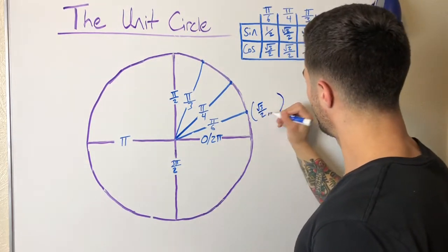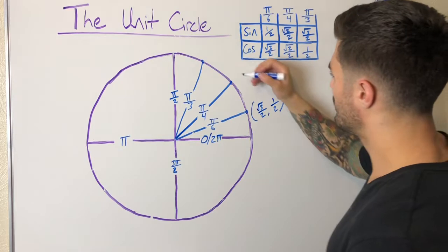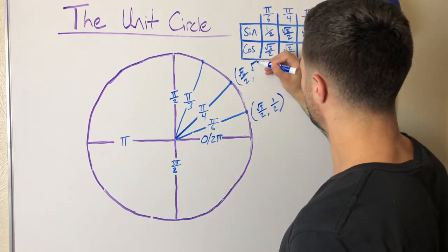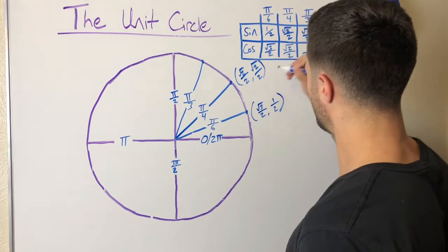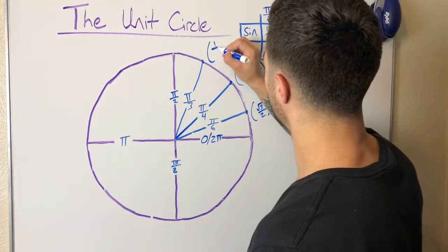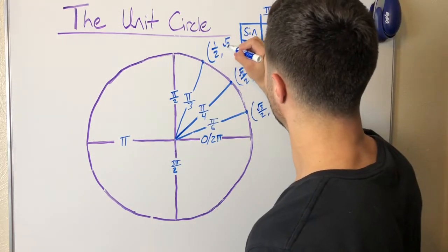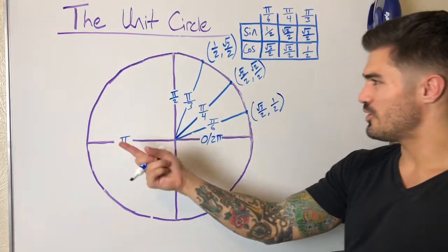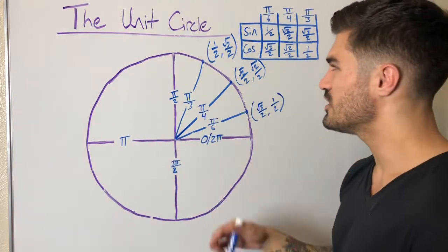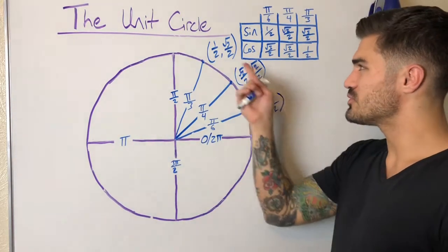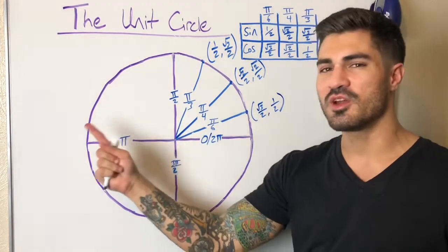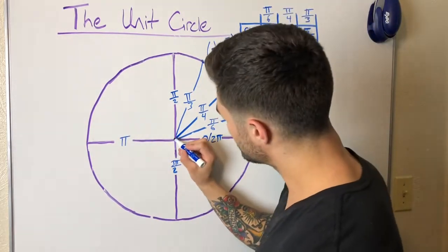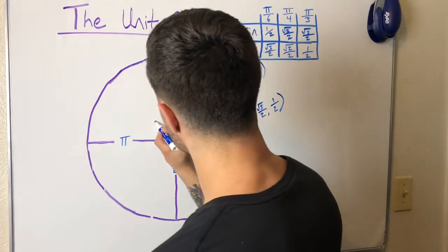I memorize the pattern 1-2-3, 3-2-1 for the values. Sine is y and cosine is x. So in the first quadrant: at pi over six we have (root 3 over 2, one half); at pi over four we have (root 2 over 2, root 2 over 2); at pi over three we have (one half, root 3 over 2). Now reflecting over the y-axis — the distances stay the same but some values become negative.